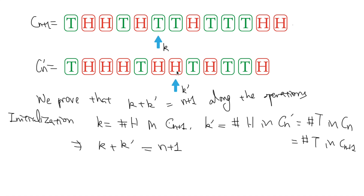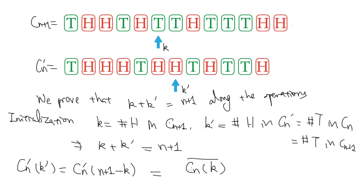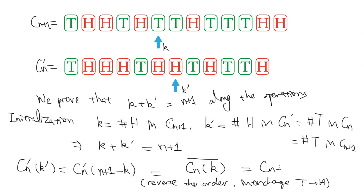Moreover, we saw that the coin indicated at k' is the opposite value of the coin indicated at k. This is because we have reversed the ordering of the sequence. So the k-th position in cn has been sent to the n plus 1 minus k-th position in cn', which is k'. And since we have interchanged T to H, they must have opposite values. A consequence of this observation is that when we are moving to the right-hand side in the first sequence, then necessarily we are going to move to the left-hand side in the second sequence. And this implies that the sum k plus k' is maintained along the entire operation.